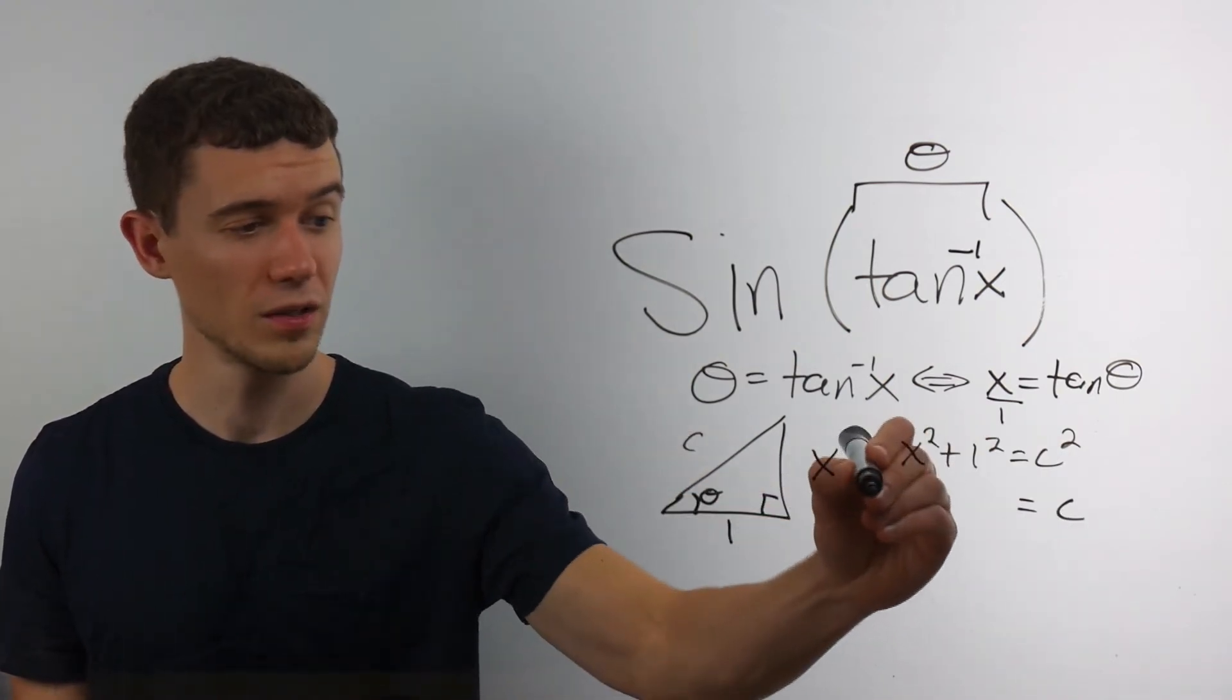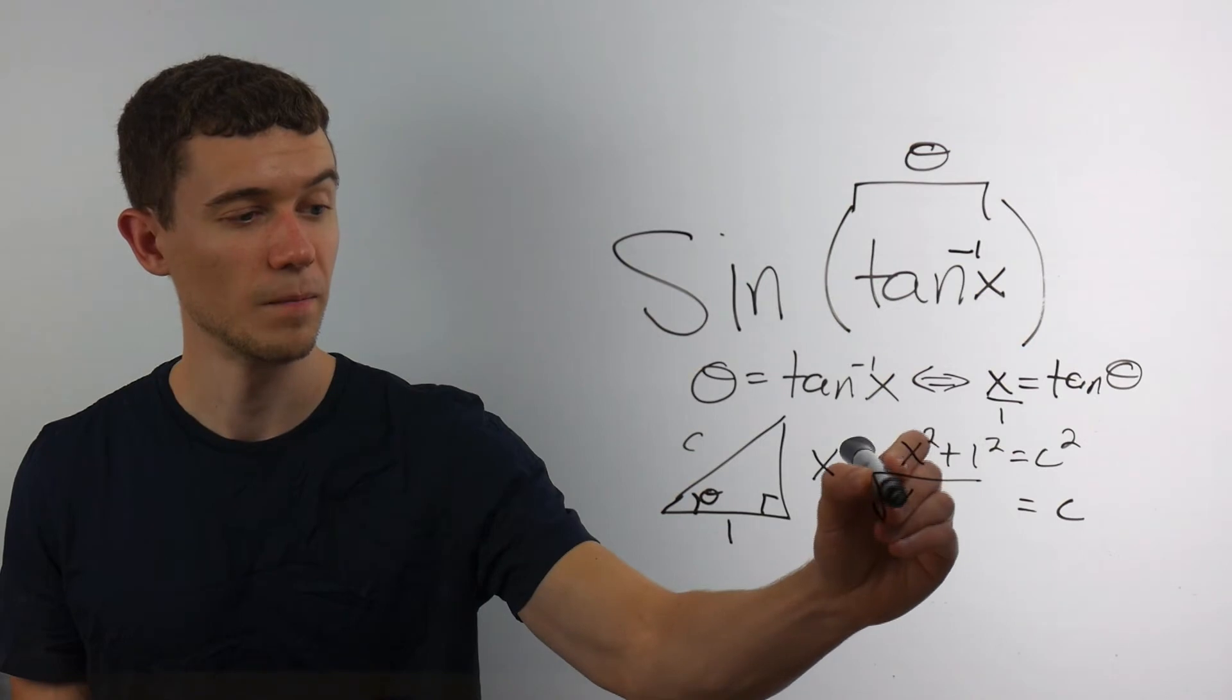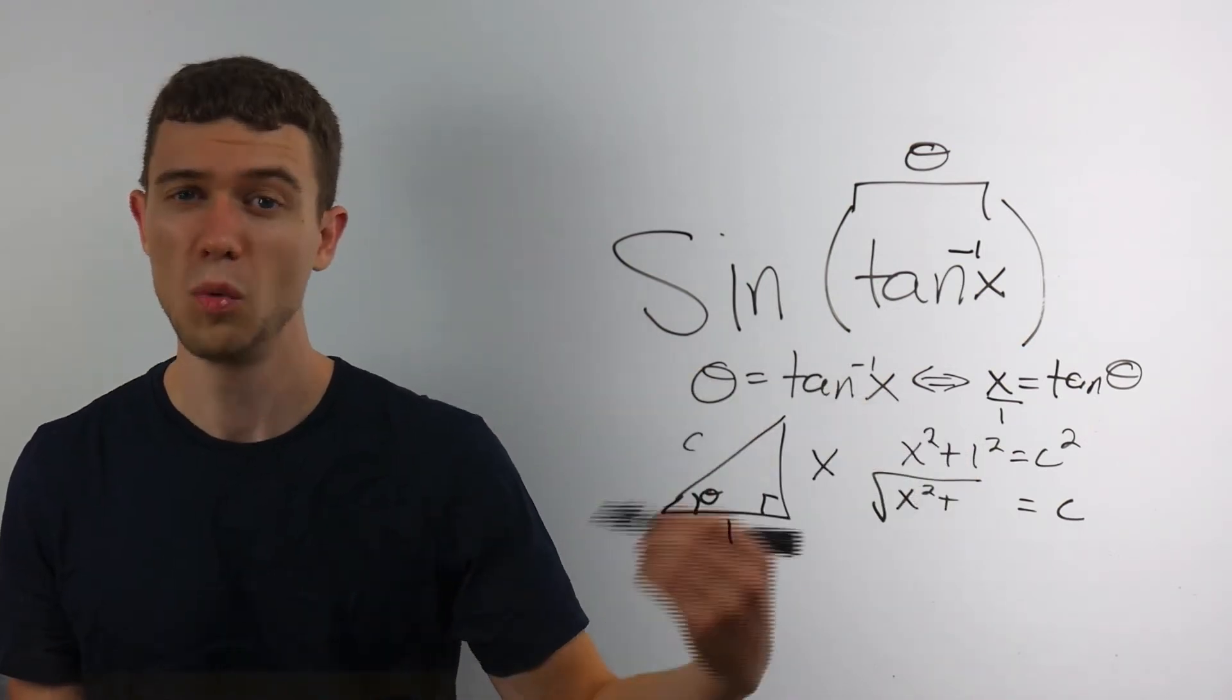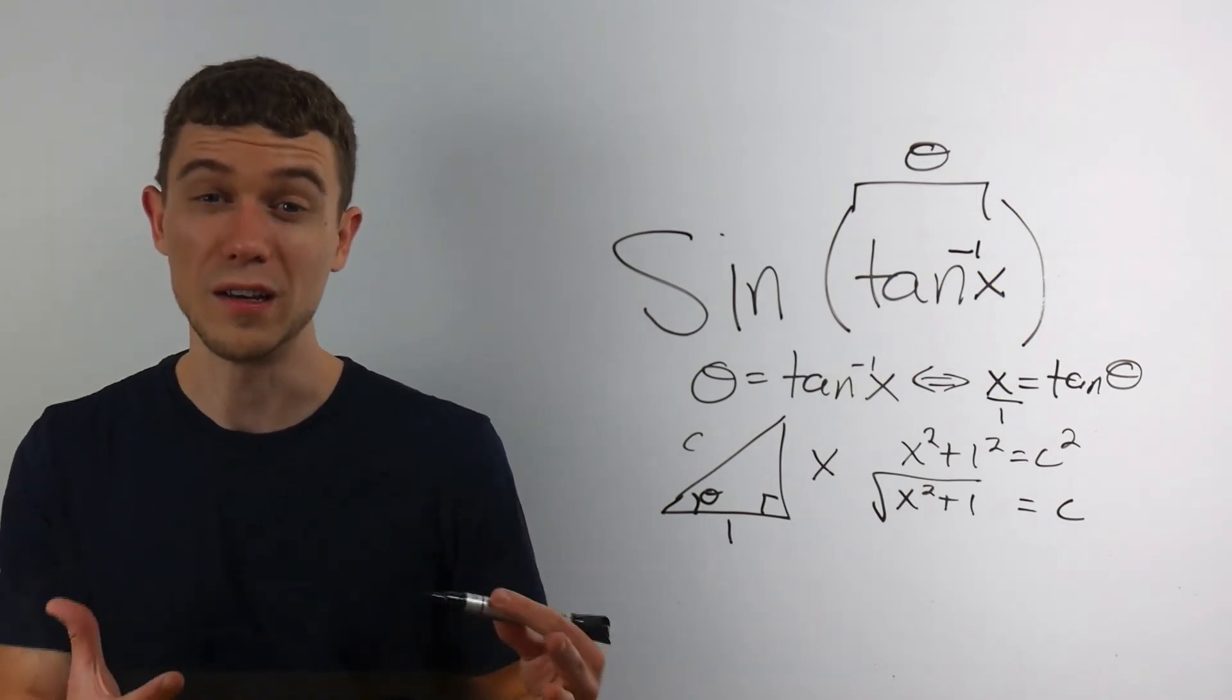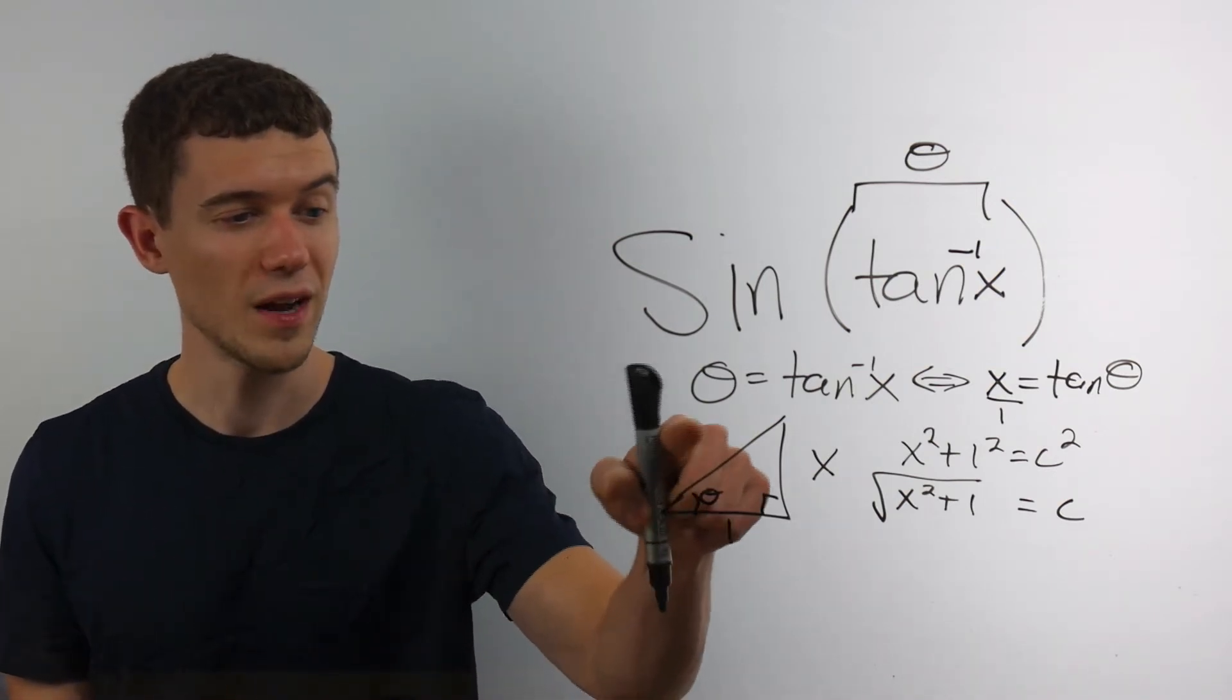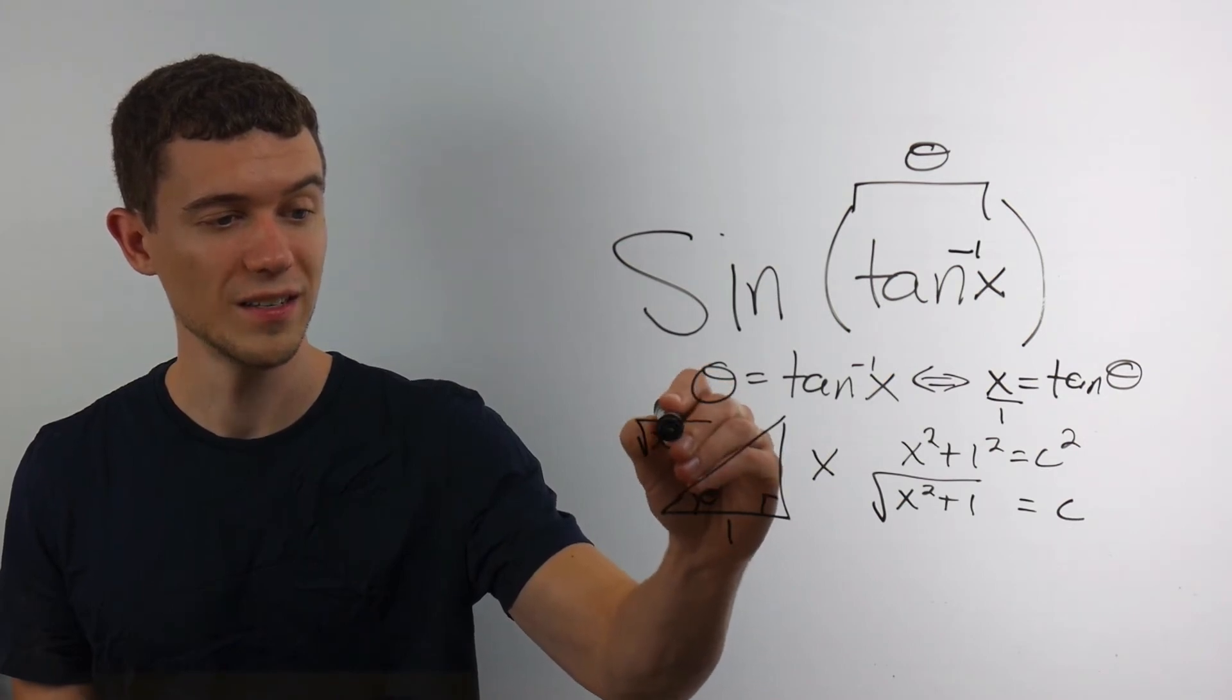1 squared is 1. So thank you very much, Pythagorean theorem. We now know what the hypotenuse of this triangle is.